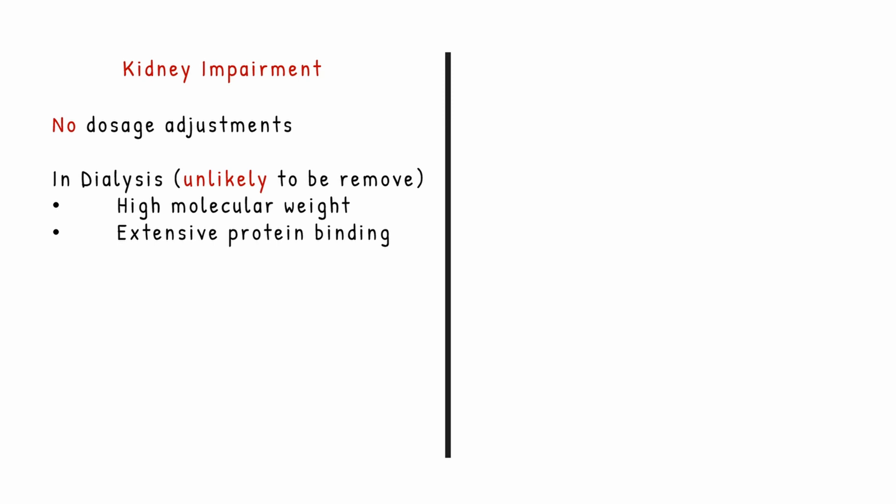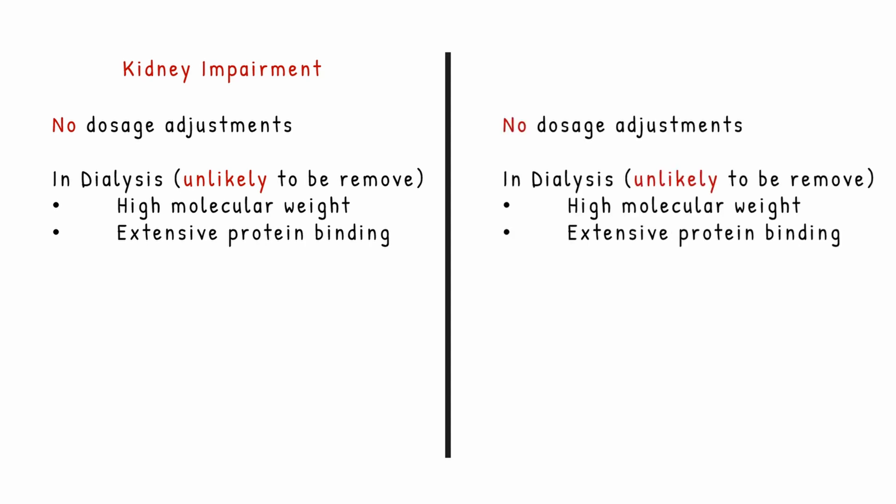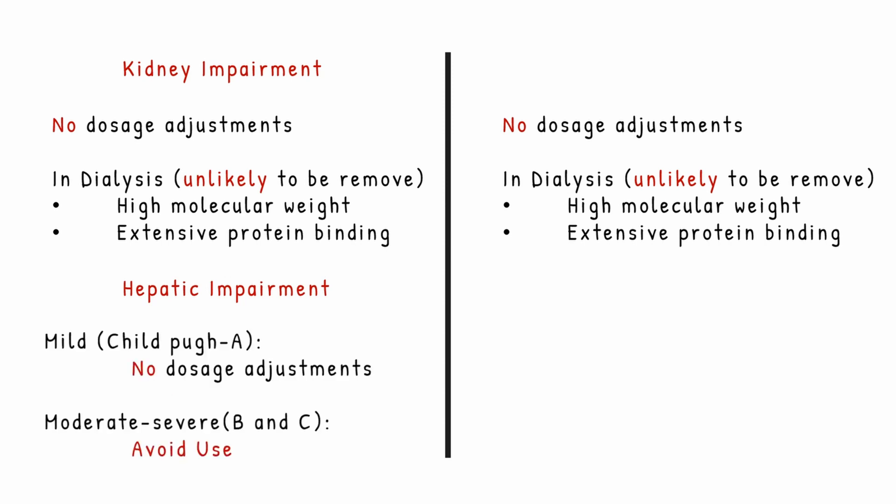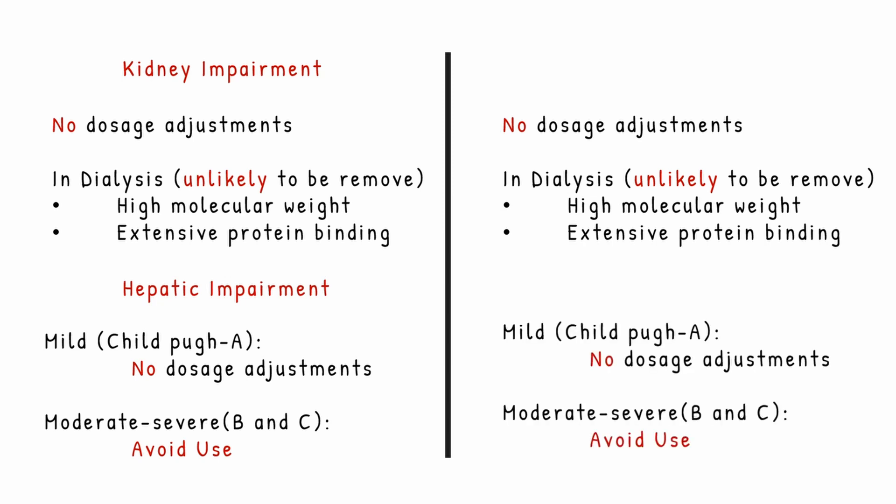In cases of kidney impairment, no dosage adjustments are needed. Even in dialysis, Bosentan is unlikely to be removed because of its higher molecular weight and extensive protein binding — this applies to pediatrics as well. For hepatic impairment, based on Child-Pugh classification, if the patient is mild in severity (class A), no dosage adjustments are needed; in moderate to severe conditions, use of Bosentan should be avoided, which is the same for pediatrics.